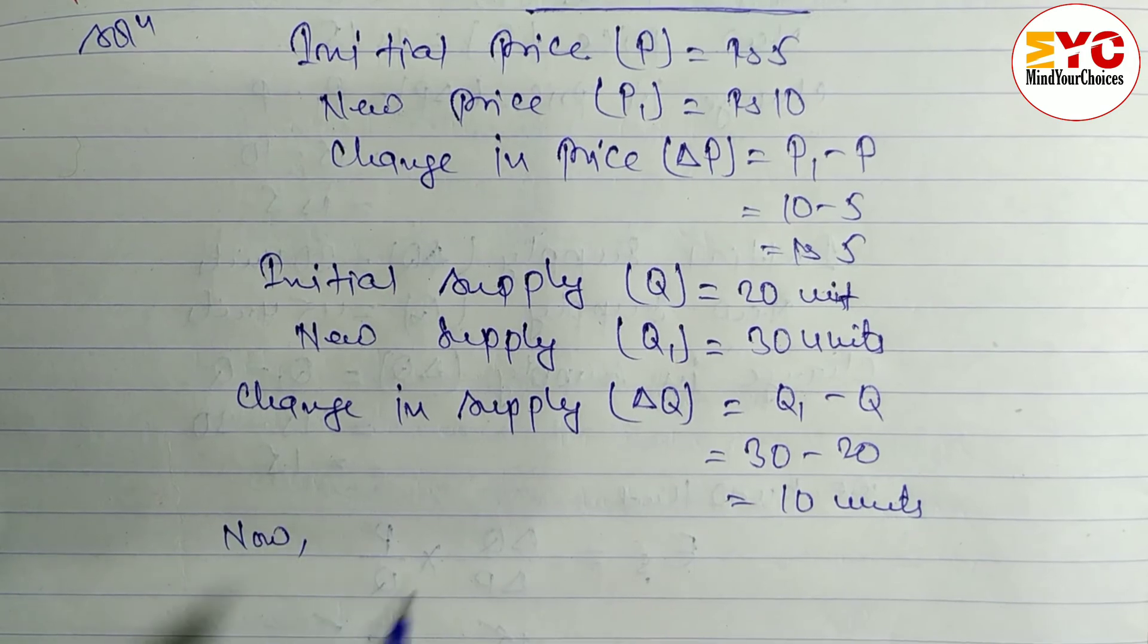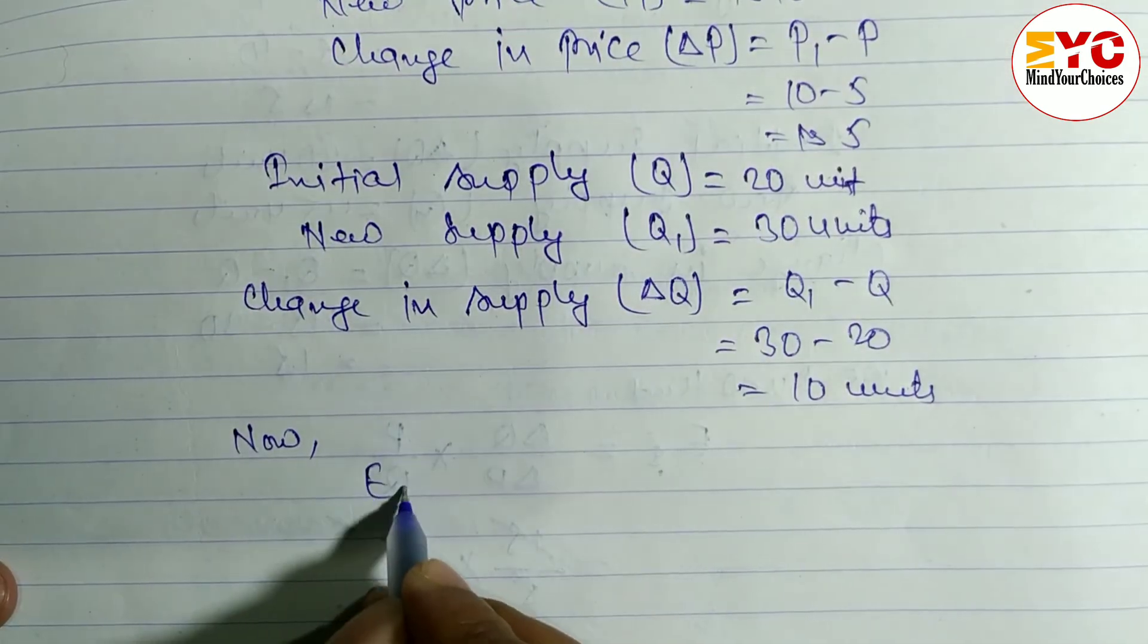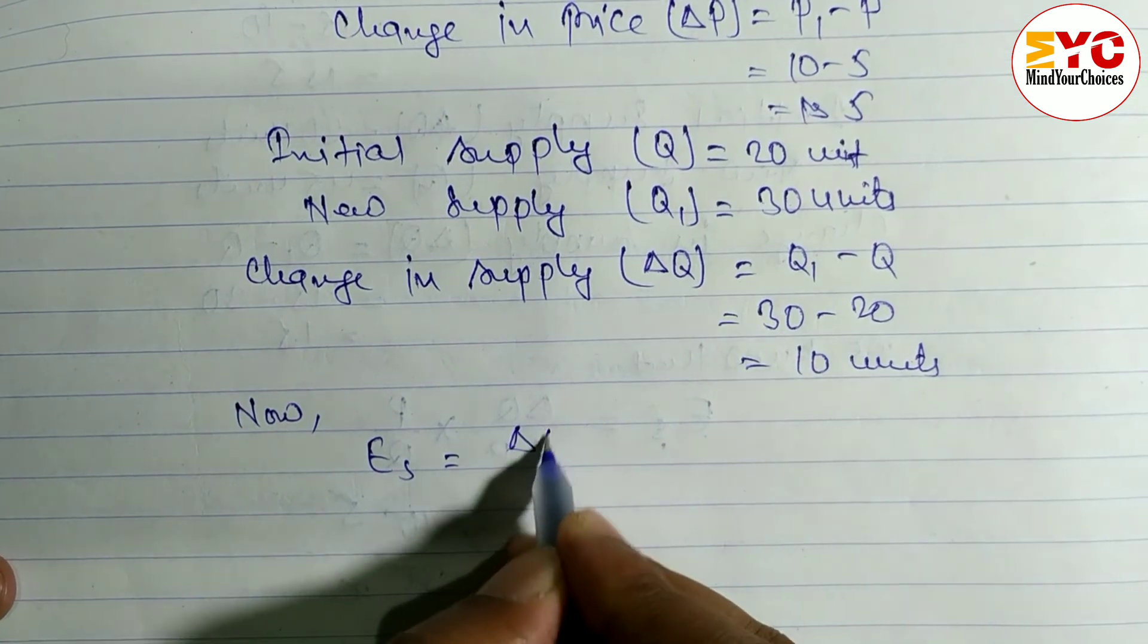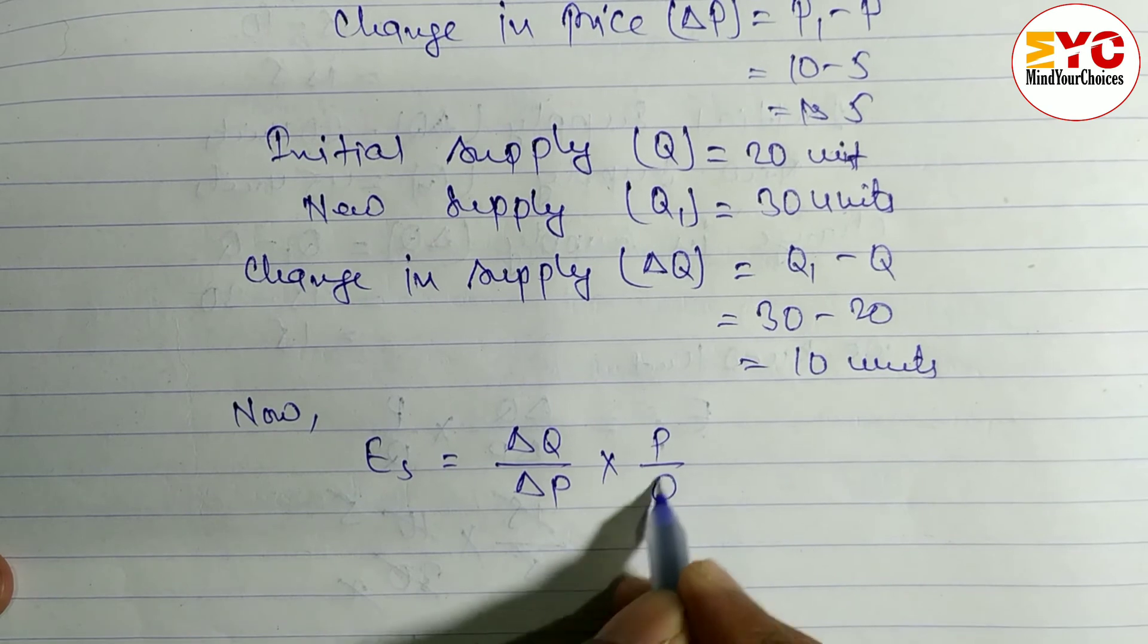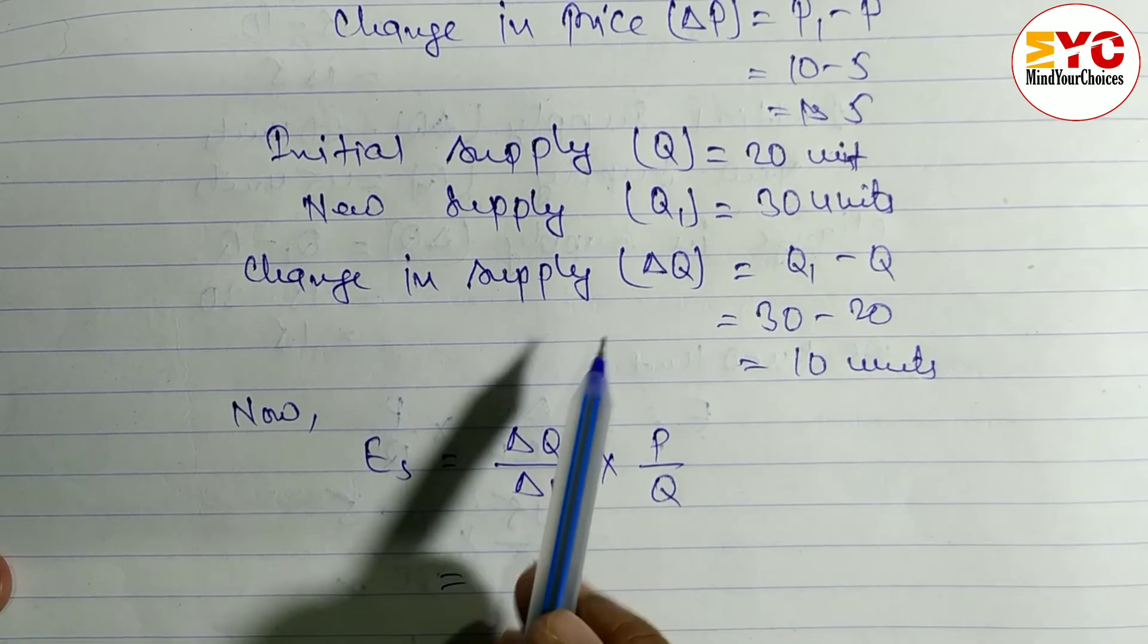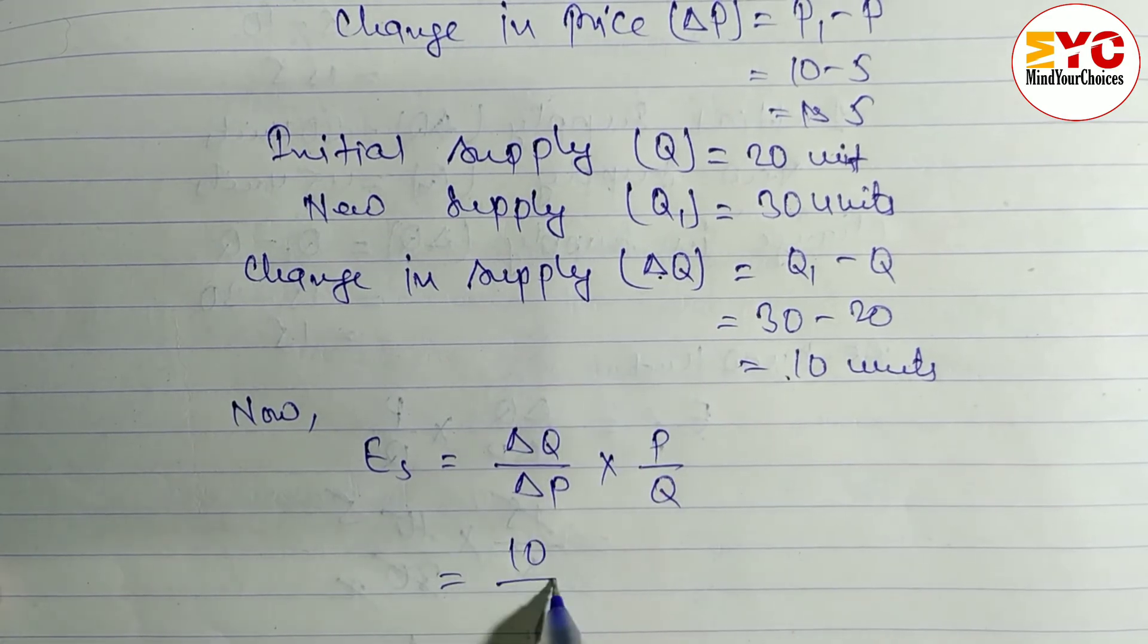Now we have to find out price elasticity of supply, which is denoted by Es, and the formula is ΔQ/ΔP × P/Q. ΔQ is equal to 10 and ΔP, change in price, is 5.